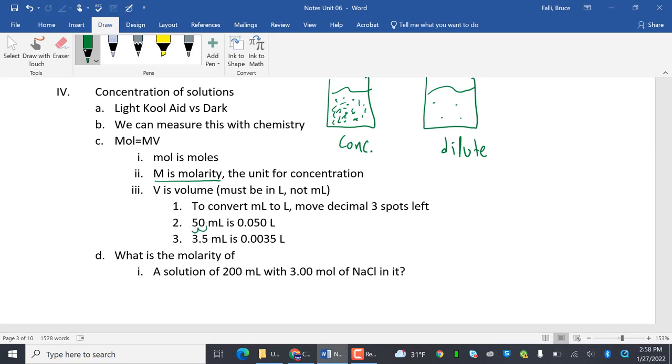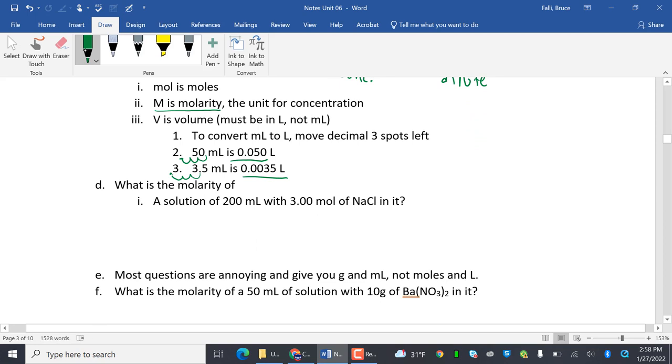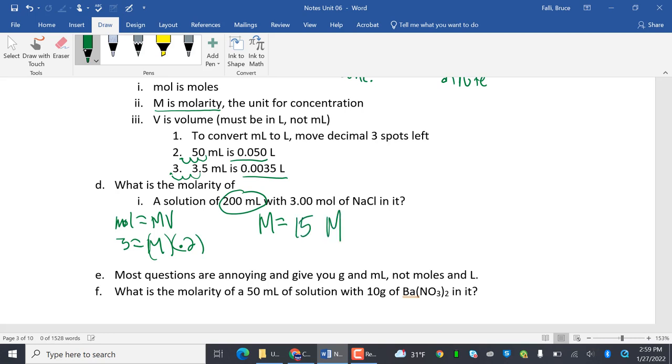A solution of 200 milliliters with 3 moles. So remember I said moles equals MV. So here we go. We got moles, we got 3. Equals, looking for molarity. My volume is not 200, it's 0.2. So now I'm going to get out my calculator, work my calculator magic. 3 divided by 0.2 is 15 molar. That's it.